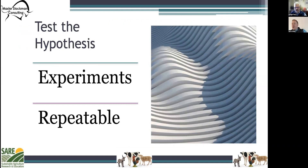In step four, we want to test this hypothesis. This is where you will actually be doing your own research. This experiment tests whether your prediction is accurate and whether your hypothesis is supported or not. It is important for your experiment to be a fair test. You conduct a fair test by making sure that you change only one factor at a time while keeping all other conditions the same. You should also repeat your experiments several times to make sure that the first results weren't just an accident.